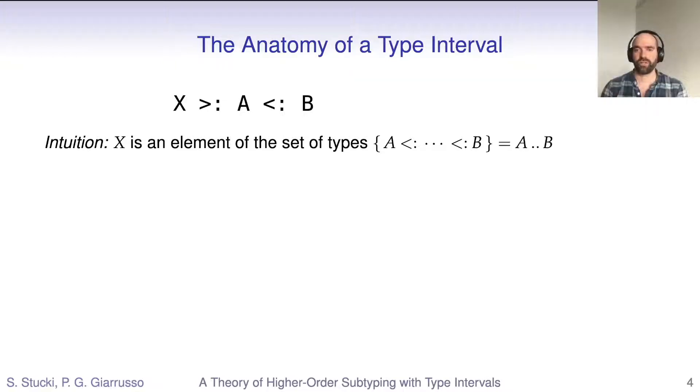Now, this intuition that there's a set of values that a certain expression can take sounds an awful lot like a type itself. Or rather, because it's a set of type values, a kind. We formalize this idea in our type system F-omega-int through the notion of interval kinds. You should read the declaration X colon A dot dot B as X is of interval kind A to B, or in other words, X is contained in the interval between A and B.